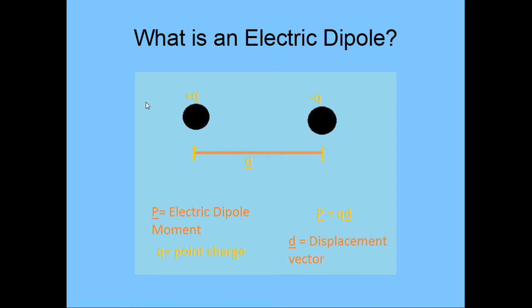First off, I'd like to talk about what an electrodipole actually is. Now as you can see in my diagram, an electrodipole is simply a moment between two charges and a distance between them. So you can see from the equation, p is equal to q times d, so that basically means that p is actually a vector. Now this is very key in understanding the dipole effect on the ECG, because this means the dipole has a magnitude as well as direction, which is key when we explain it later on.